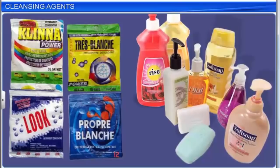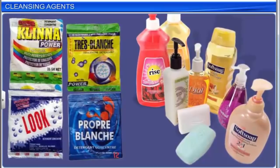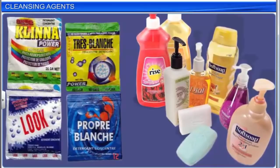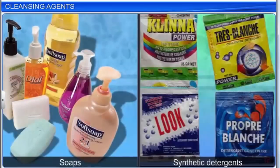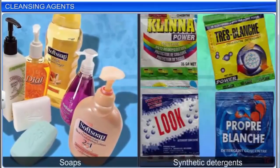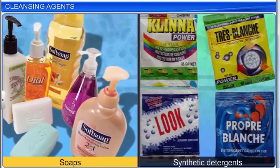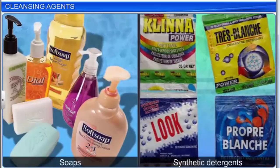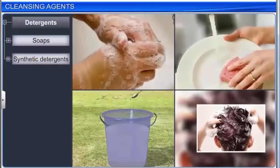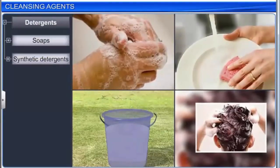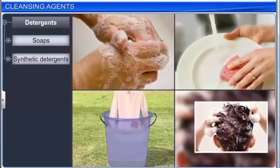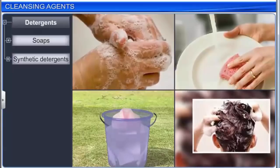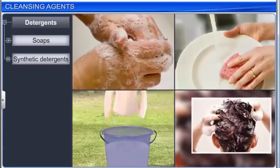The word detergent is a general term used to denote a cleansing agent. Two types of detergents — soaps and synthetic detergents — are used as cleansing agents. These agents improve the cleansing properties of water and help remove the oily and fatty substances that bind dirt and other material to the skin or fabric.